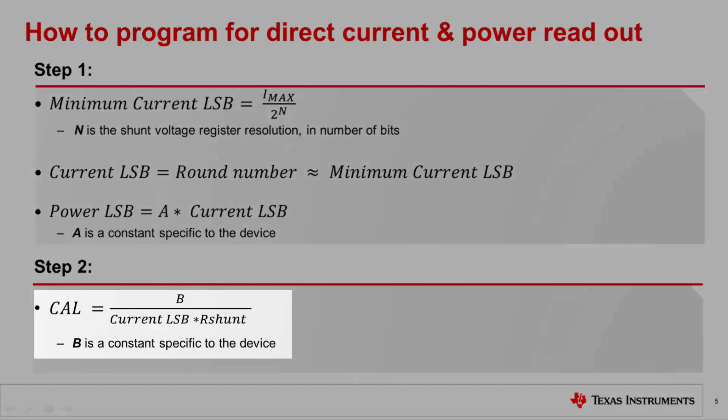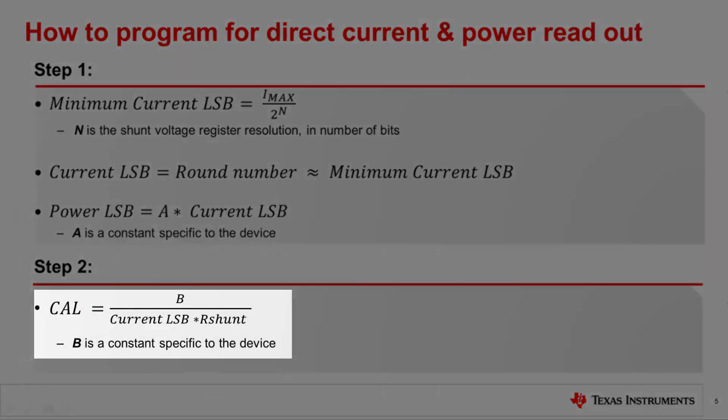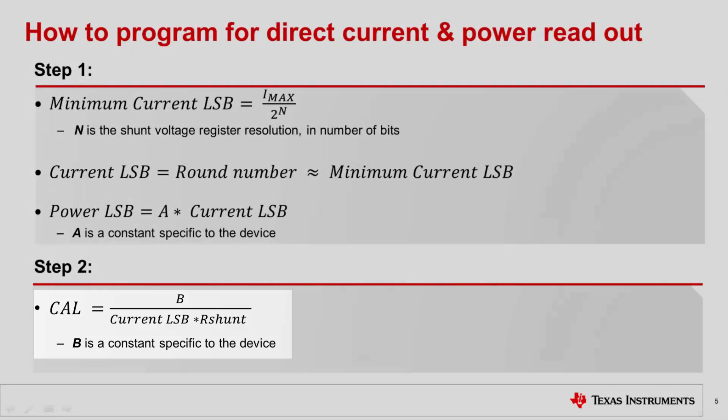Step 2 is to compute the calibration register value, or CAL. It is equal to a constant B divided by the product of the current LSB and shunt resistor value, as shown in this equation. Here, B is an internal fixed value used to ensure correct scaling. Once this calculated calibration value is written to the calibration register, we are ready to start reading the registers for current and power.